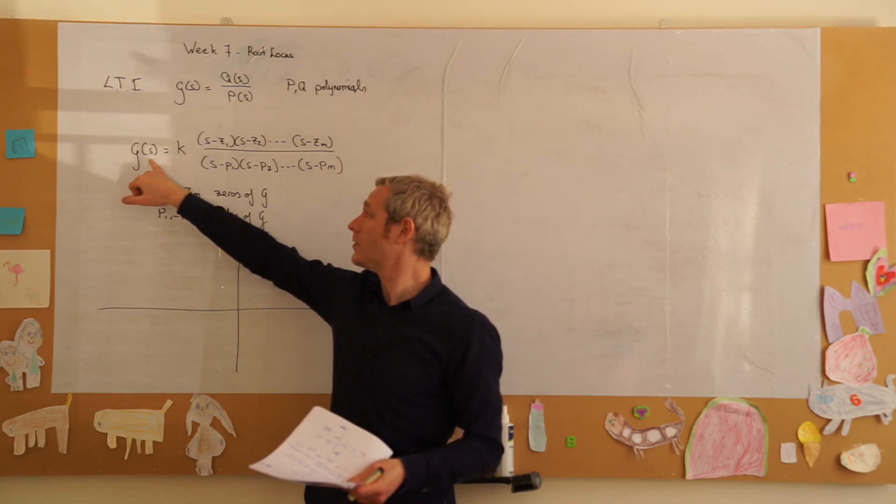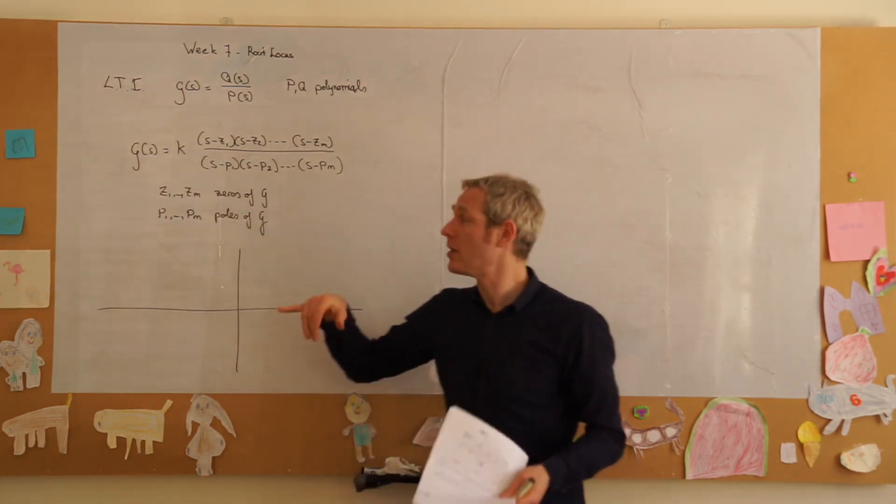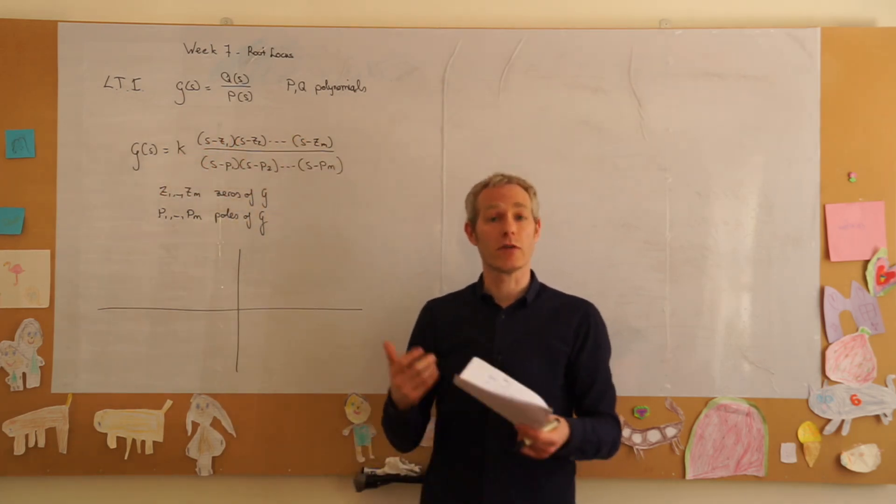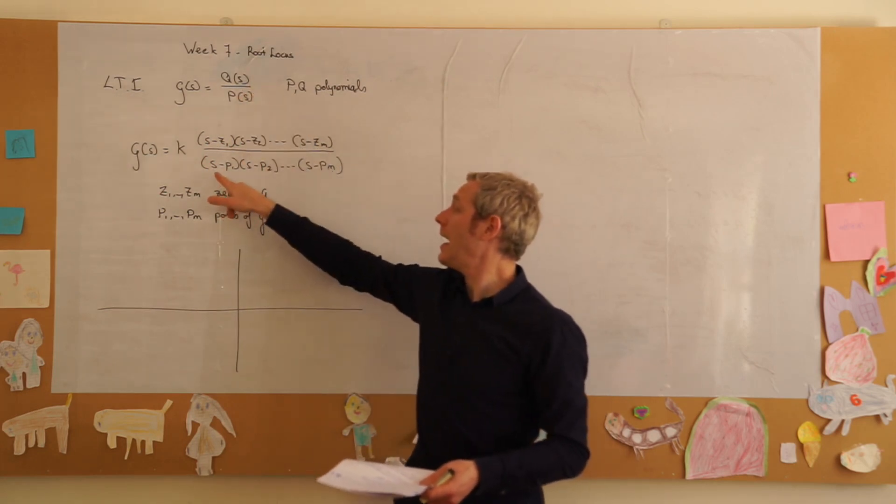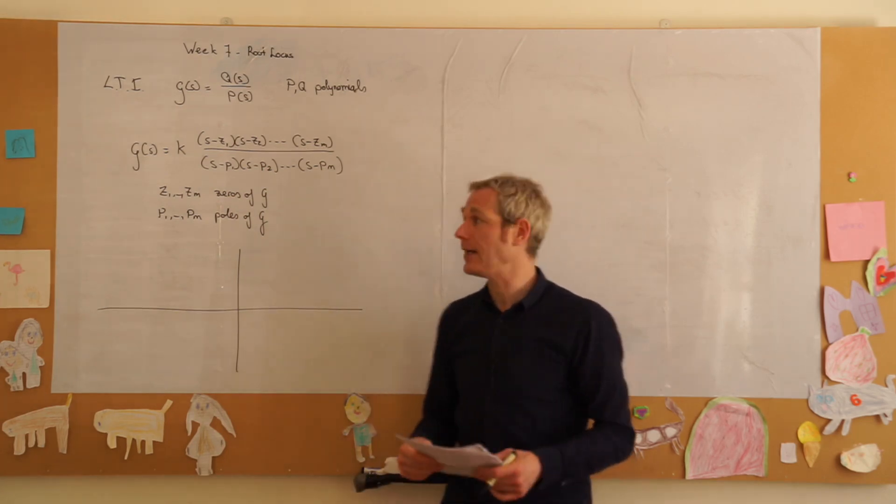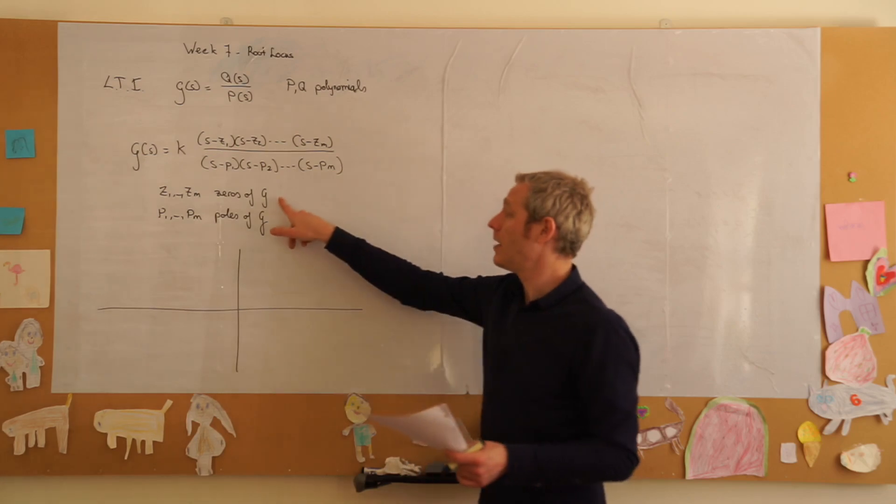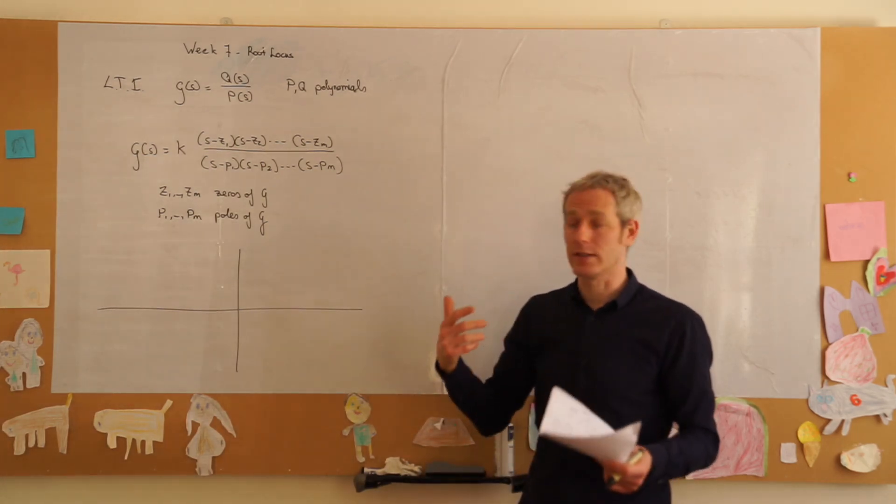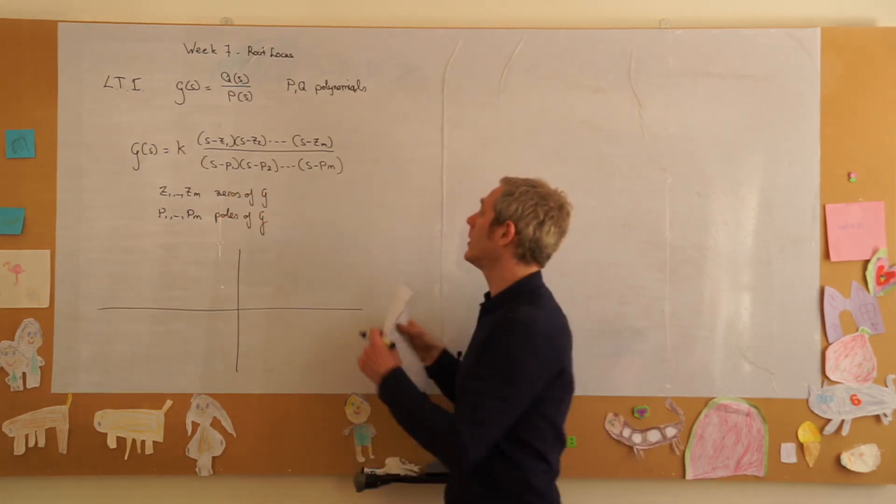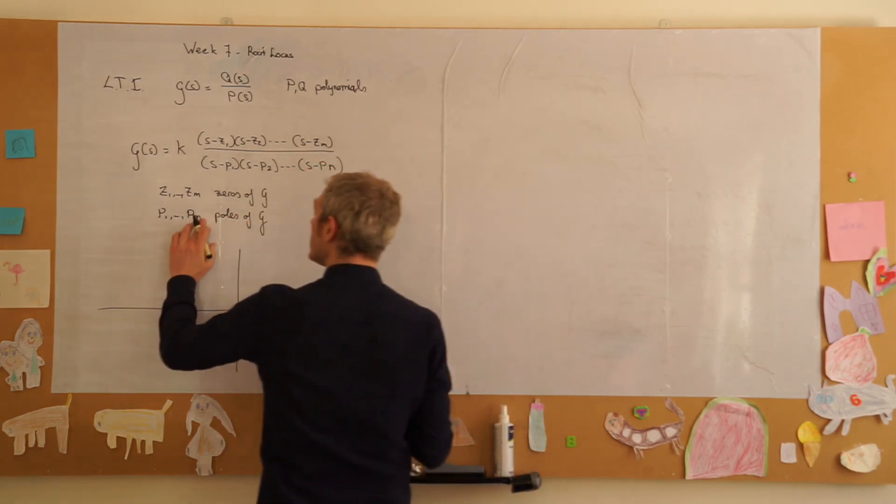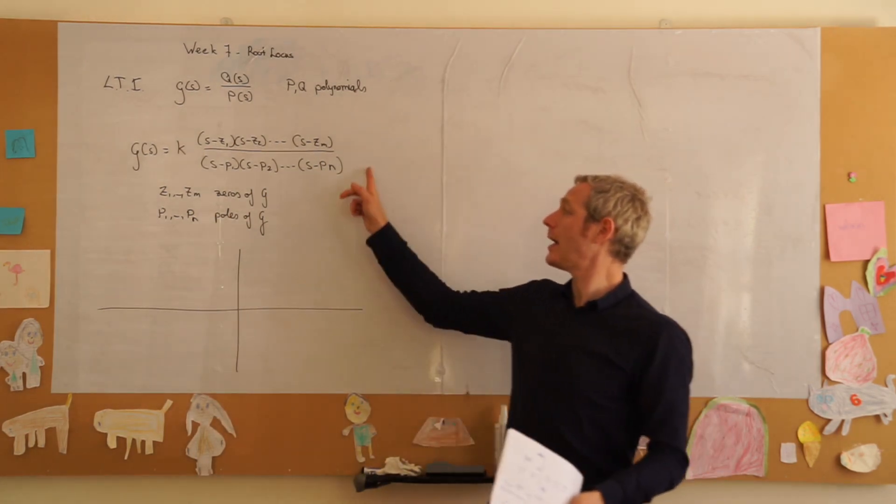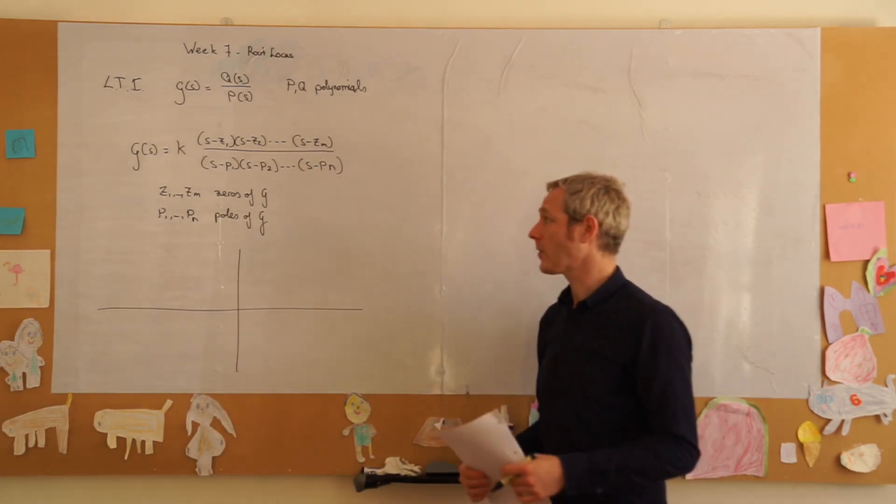So if we take our transfer function, we can write it as some constant times s minus z1 to s minus zm, so those are the roots of the numerator, and s minus p1 to pn, those are the roots of the denominator. And we have the zeros, zm, they are called the zeros of g. It's where the function is equal to zero. And the poles pn, those are called the poles of our transfer function. It is where our transfer function goes to infinity, or is not defined.